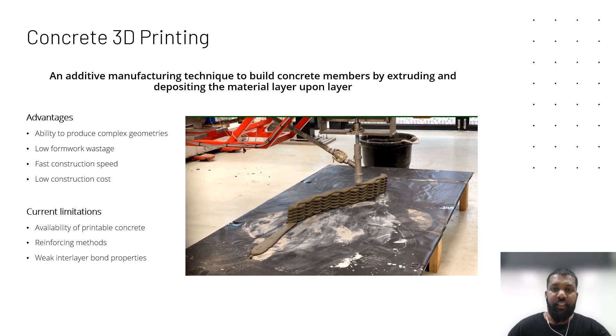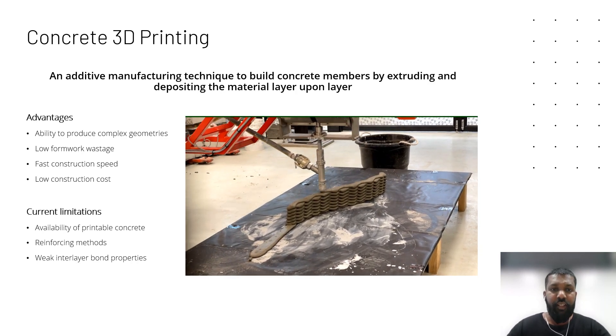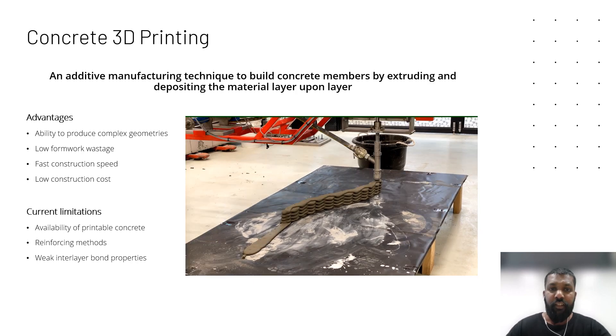There are several advantages to this technique. Since we get rid of the formwork, we cut down the cost and waste. We can also print nice geometries since formwork basically limits the shape of the structure. That kind of reduces the disputes between architects and structural engineers. The use of machines also makes this form of construction faster.